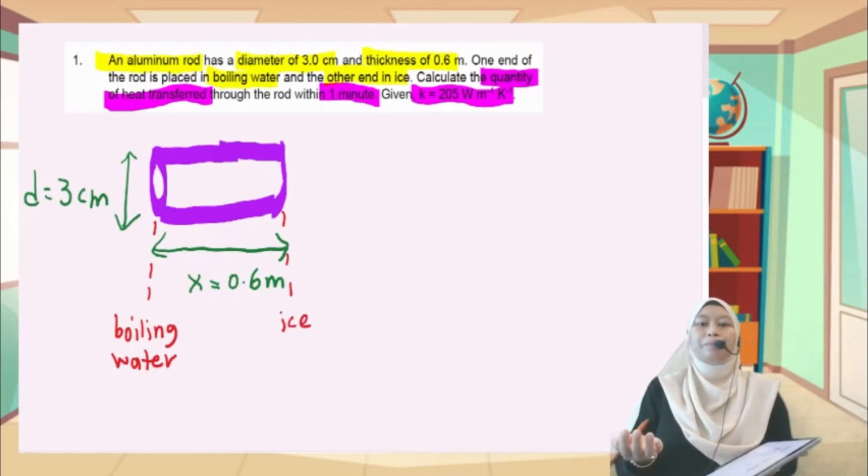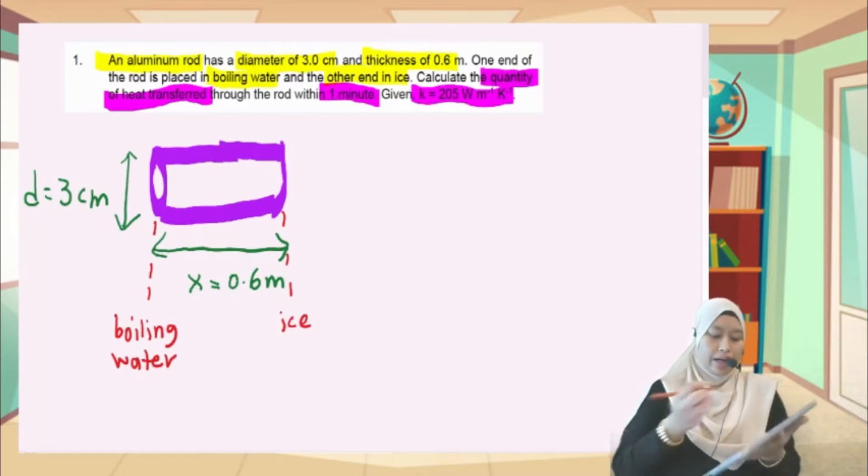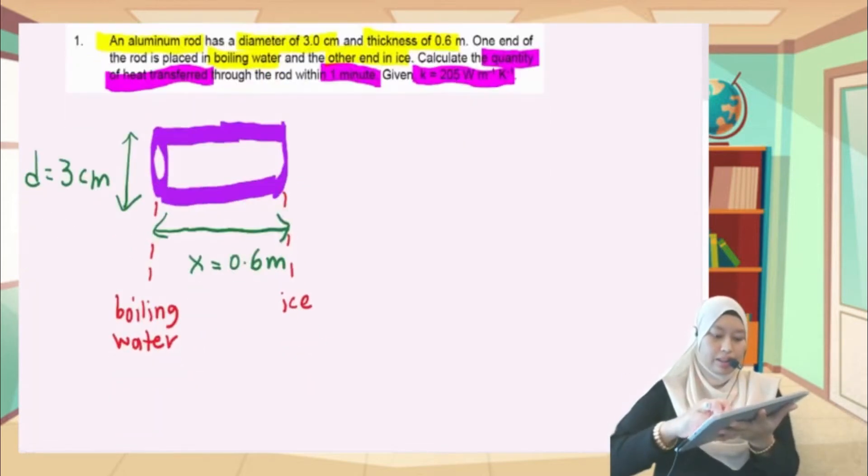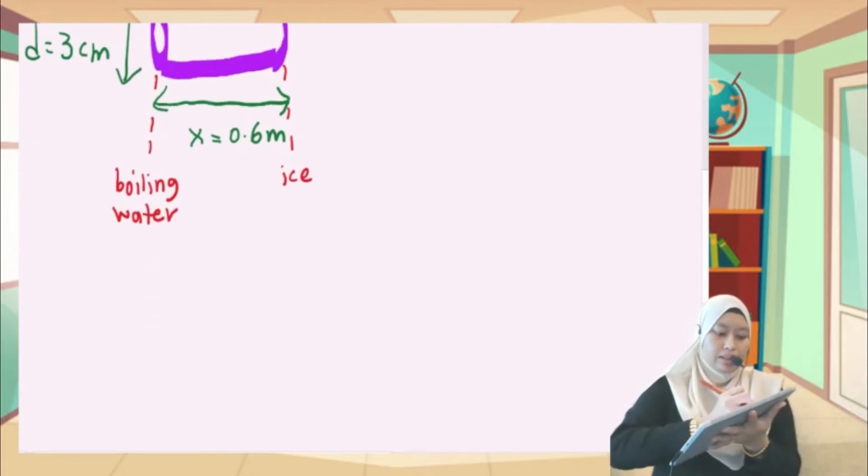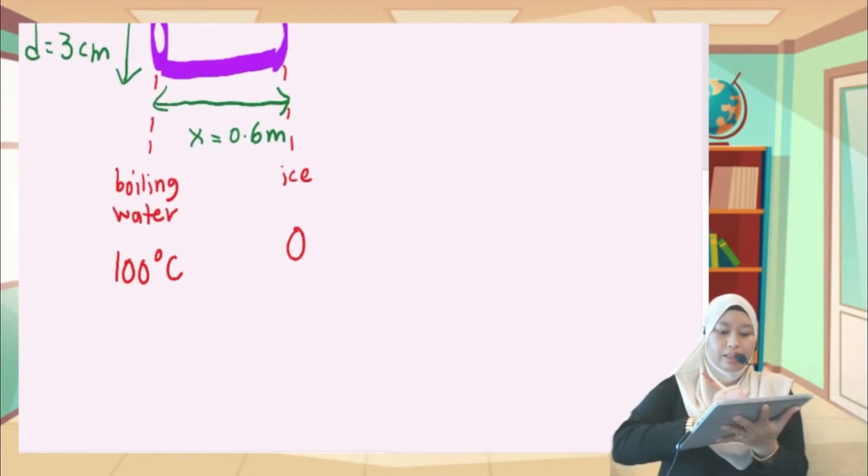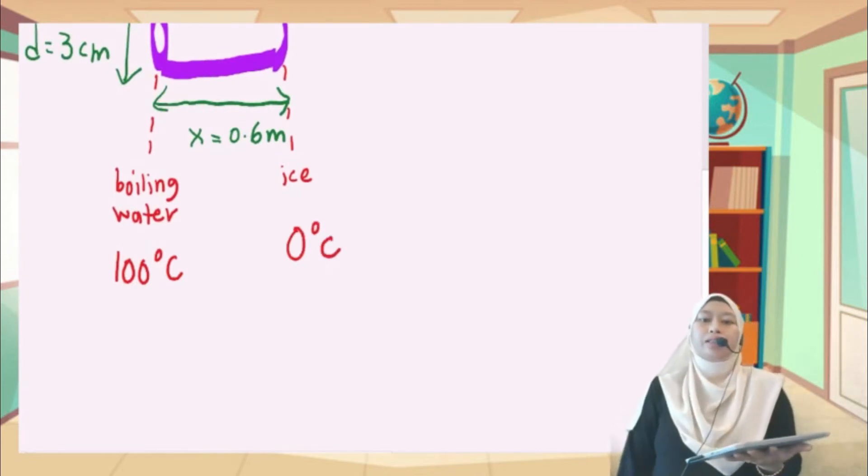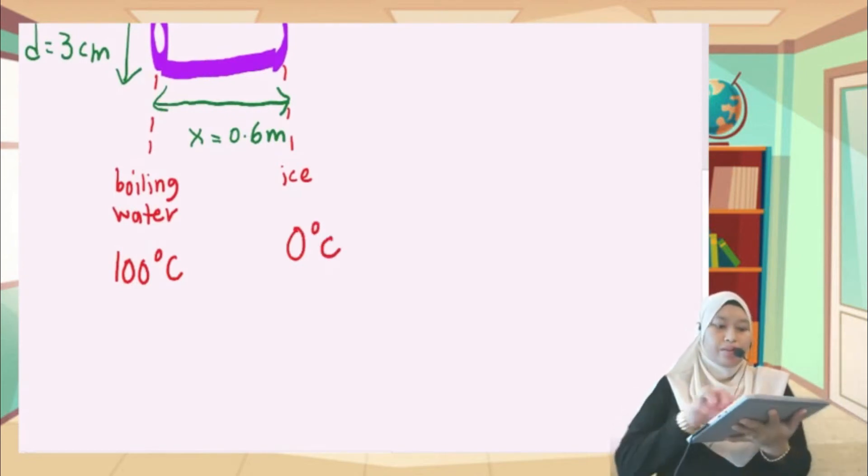As we know, the temperature of boiling water is 100 degrees Celsius, and the temperature for ice is 0 degrees Celsius.